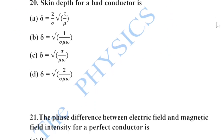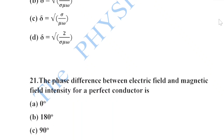Next: skin depth for a bad conductor is δ = (2/σ)√(ε/μ). Option A is your correct option.